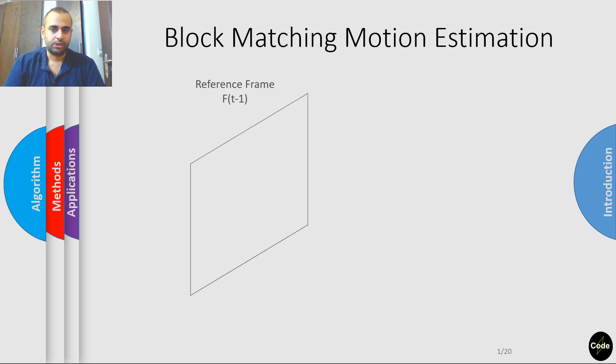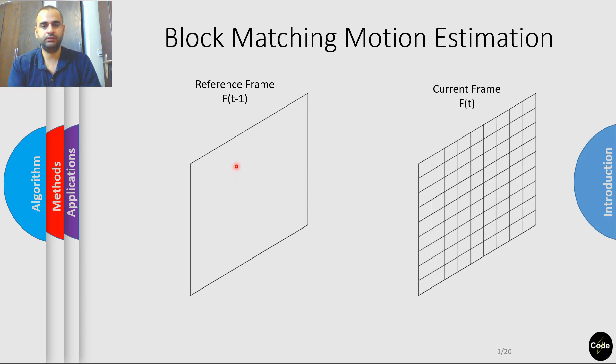Specifically, in this approach we start with a current frame that we want to analyze for motion compared to a reference frame. First, we divide our frame into blocks of pixels, and for each block our goal is to locate the most similar group of pixels in the reference frame.